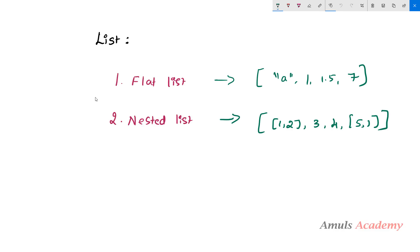Since max and min won't work directly on a nested list, we will convert the nested list to a flat list first, then apply the max or min function to find the maximum or minimum value. We will see how to do this conversion in the program.